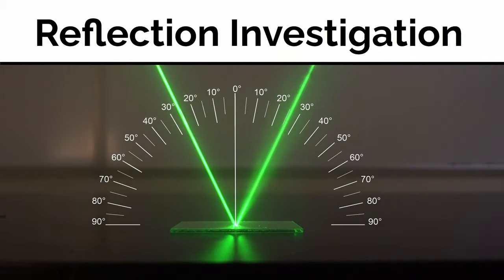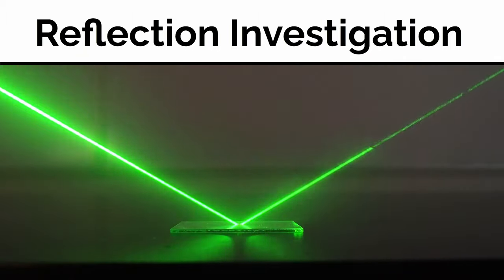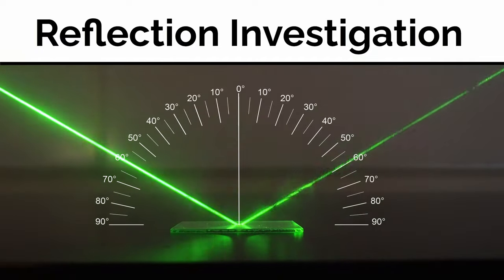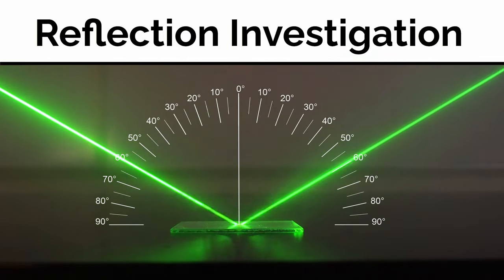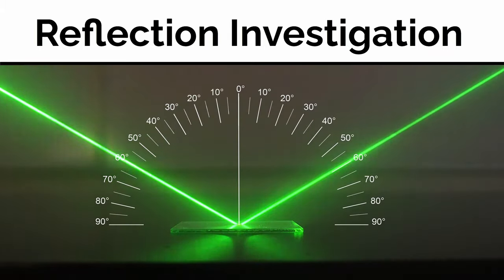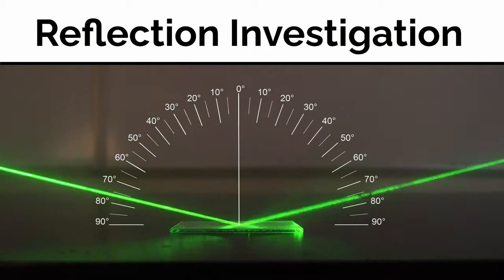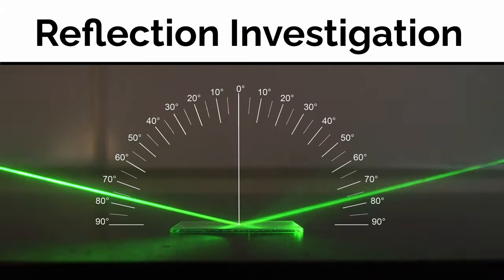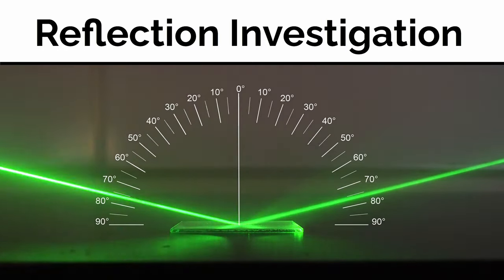Let's change the angle to see if that still holds true. Here's a larger angle — the incoming angle is about 60 degrees on the left, and the reflected angle is also about 60 degrees. Here's another larger angle: about 76 or 77 degrees is coming in from the left, measured from that perpendicular line, and again the reflected angle is the same — about 76 or 77 degrees.